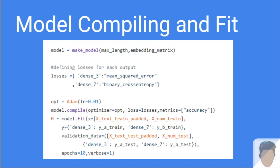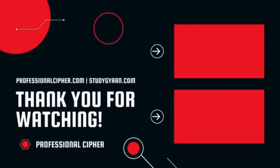By this, we have found a solution for multiple input and output problems using Keras Functional API. I hope the video helped you get into a new territory of machine learning and explore more. Be curious and keep exploring. Thanks for watching — subscribe to ProfessionalCipher.